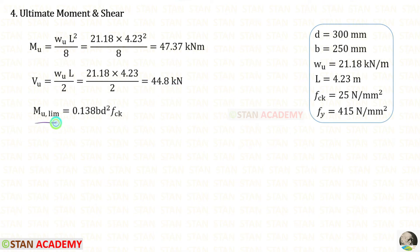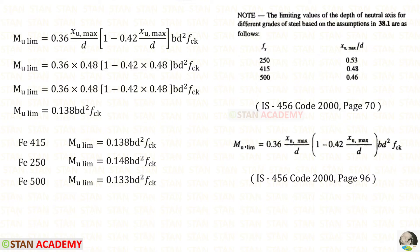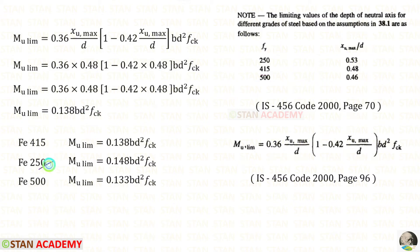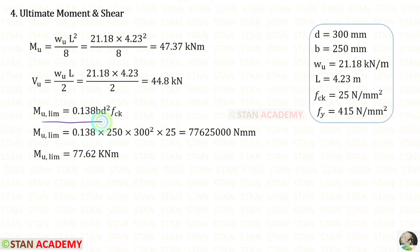Now we need to find the limiting moment of resistance. From codebook page number 96, we copy the formula. From page number 70, for Fe415, Xu_max upon d is 0.48. Substituting 0.48 into the formula gives the limiting moment of resistance. Note that for Fe250 and Fe500, the values would be 0.53 and 0.46 respectively. After applying all values and dividing by 10^6, we get the result in kilonewton-meter. Since Mu is less than Mu_limit, the section is under-reinforced.